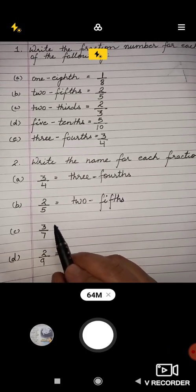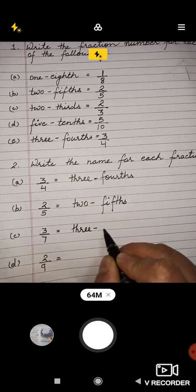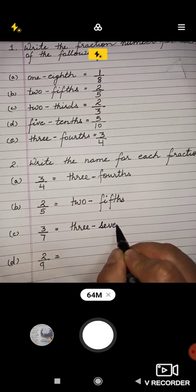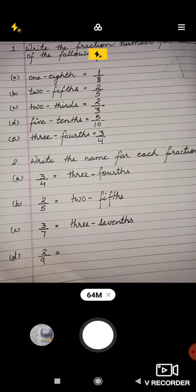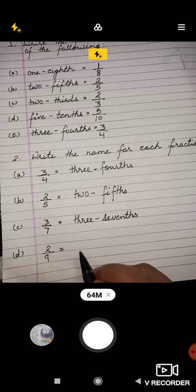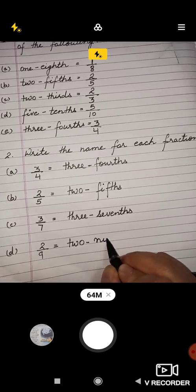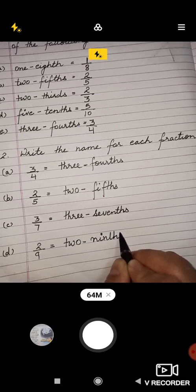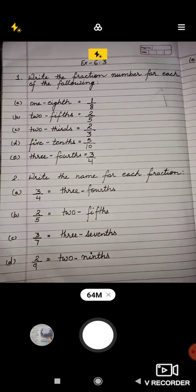Then two upon nine, so you will write two, then ninth, N-I-N-T-H-S, ninths. So dear students, you have learnt how to write name in fraction and how to write fraction in name.